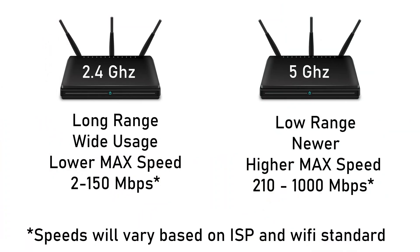5 gigahertz signals are best used when there is a clear line of sight between the router and the device you're using. If you're in a multiple story house, you may see poor signal strength on the 5 gigahertz signal walking too far from the router, to a point where you'd actually get a faster speed on the 2.4 band.